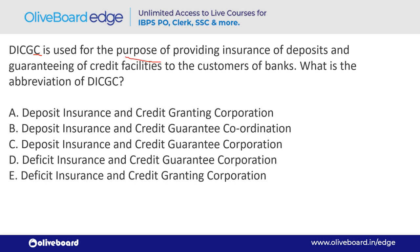DICGC is used for the purpose of providing insurance of deposits and guaranteeing credit facilities to the customers of banks. Basically, it provides insurance to deposits. The full form of DICGC is Deposit Insurance and Credit Guarantee Corporation — option C. This is a very important question.